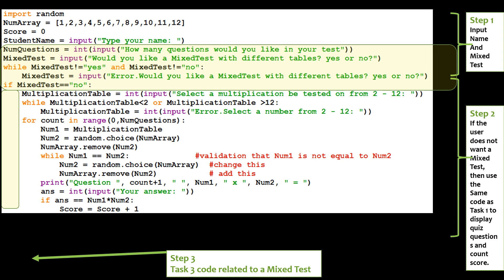So we're going to add a prompt number of questions is equal to int input. How many questions would you like in your test? Mix test is equal to input. Would you like a mixed test with different tables? Yes or no. And I've put some validation for mixed test. If it's not equal to yes or no, then error, you need to type either yes or no.